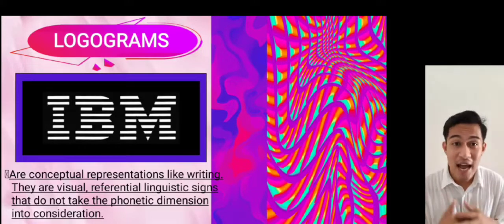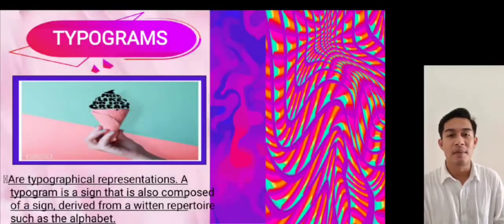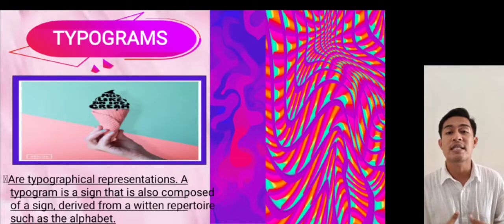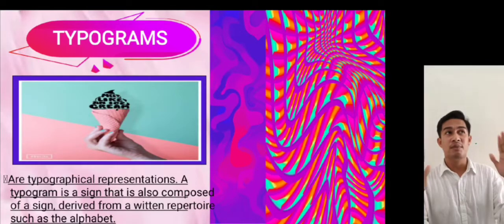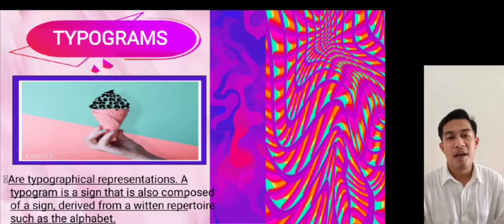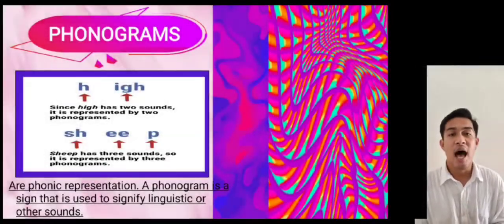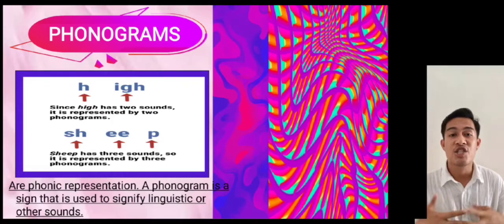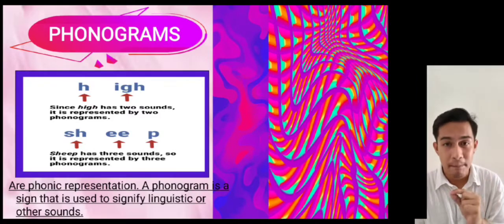Seventh, typograms. Typograms are typographical representations — signs composed of elements derived from a written repertoire such as the alphabet. An example is a picture shaped like an ice cream but created using letters or words — the shape of the ice cream is formed by the words themselves. Eighth, phonograms. Phonograms are phonetic representations — signs used to signify linguistic or other sounds. For example, the word 'ship' has three sounds: sh, e, and p, but is pronounced as one word.